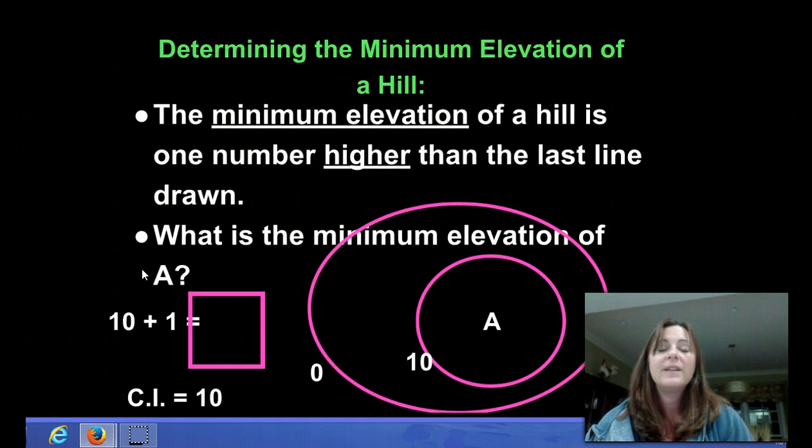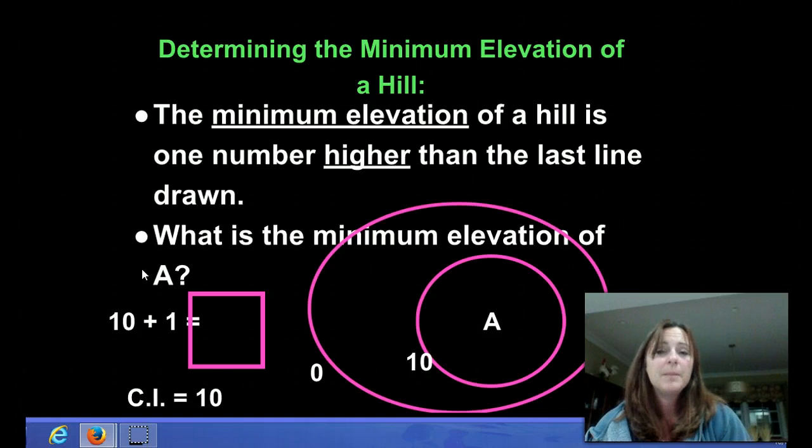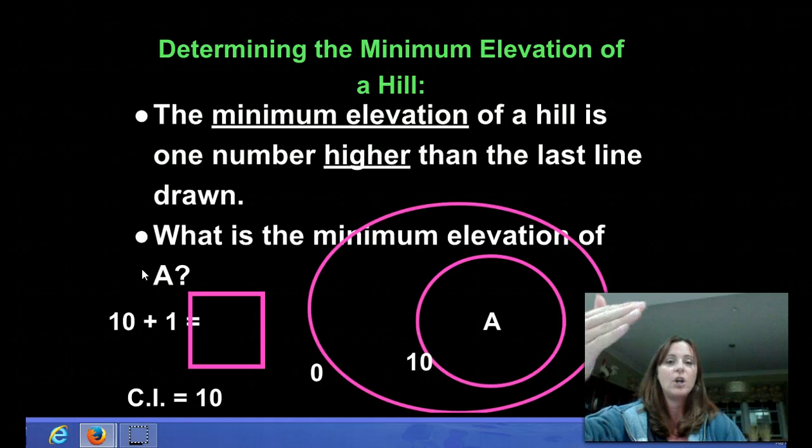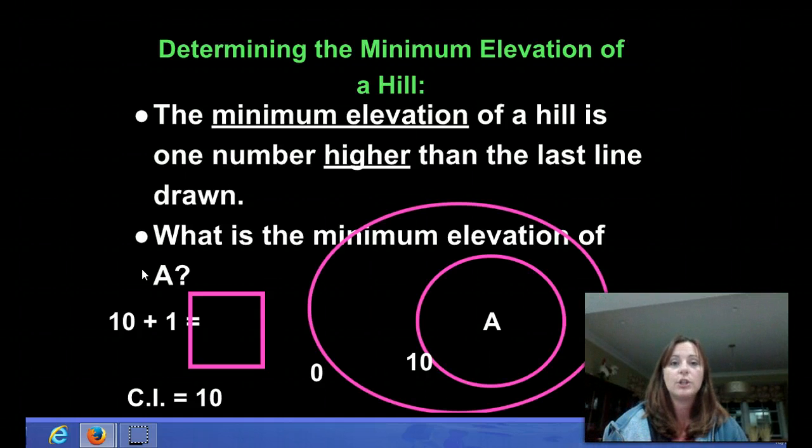One more example. Now this time we're determining the minimum elevation of a hill. The minimum means the smallest number that it possibly could be. The minimum elevation of a hill is one number higher than the last line drawn. So instead of thinking ahead at the next contour line, we're going to use the highest elevation and just add one to it. So for this instance, we have the contour interval of 10. 10 is the highest elevation. We add one to that and our minimum elevation would be 11.